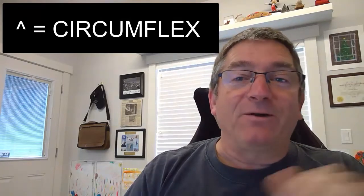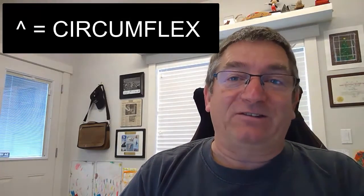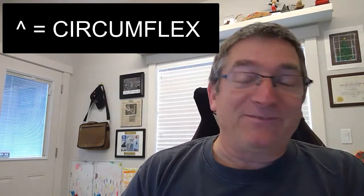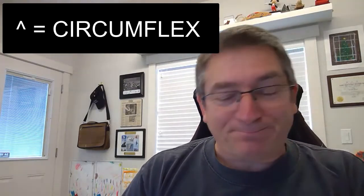The next one I want to talk about is one that's not often used. It sits above the number six on your number row and it's that kind of up arrow looking thing. In general terms it's referred to as a carrot, but the correct term for that up arrow thing is a circumflex. I didn't come up with this stuff — I'm just parroting.